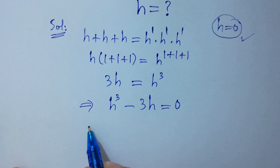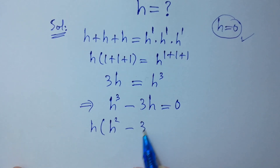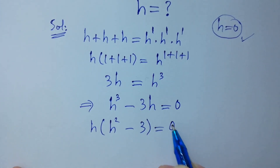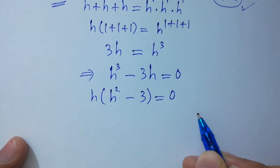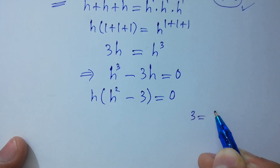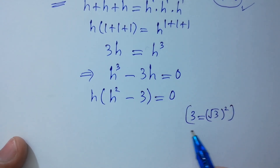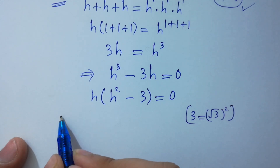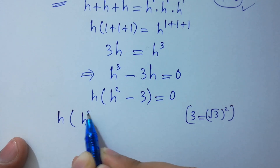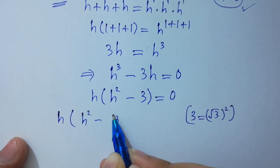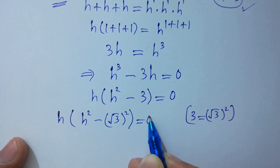Factoring out h, we get h times (h squared minus 3) equal to 0. Since 3h equals (√3)², we can rewrite this as h times (h squared minus (√3)²) equal to 0.